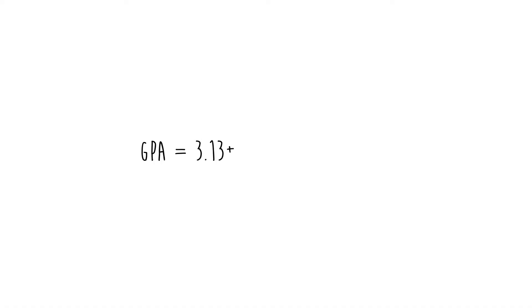In other words, don't take a statistical model too literally. For example, if we have GPA equals 3.13 plus 0.006 times IQ plus negative 0.4 times TV plus e, do we really think that people implicitly say 'I watched one hour of TV today so now I need to drop my IQ by 0.006 points'? Heck no! We don't really believe these statistical models, but they often provide good descriptions of what might actually be going on, and that description is either useful or it's not.